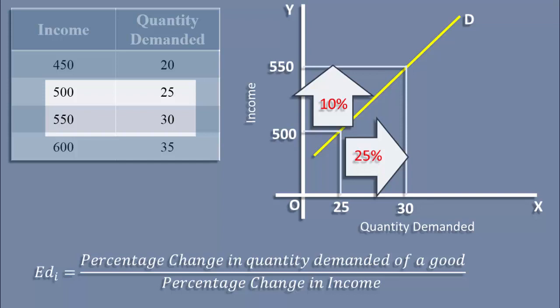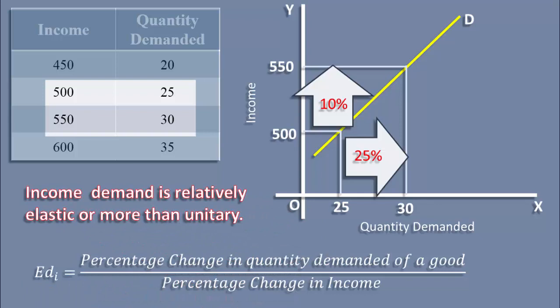Percentage increase in income is 10%, and percentage increase in quantity is 25%. Since a proportionate increase in income of 10% causes a more than proportionate increase in quantity demanded of 25%, the income demand is relatively elastic or more than unitary.